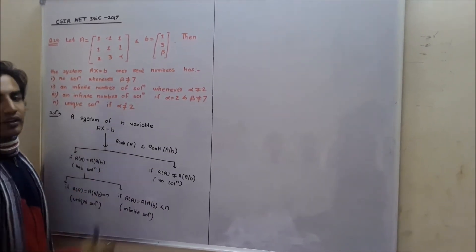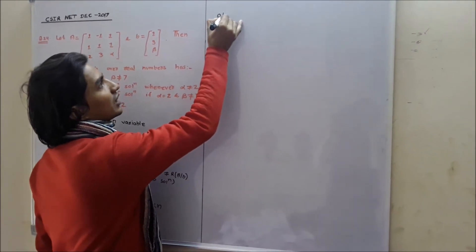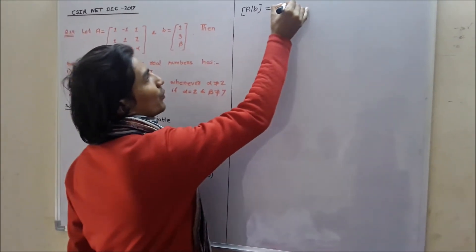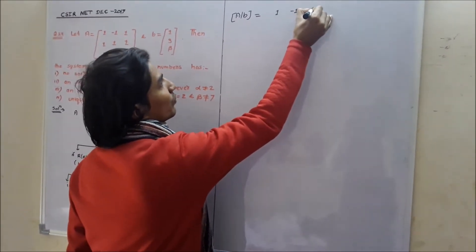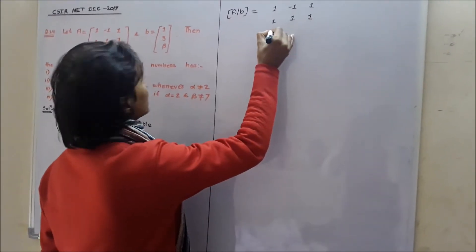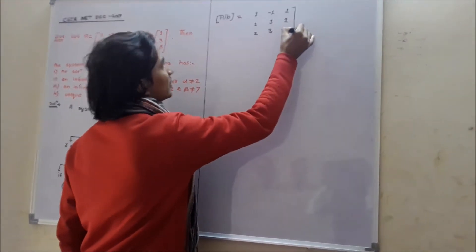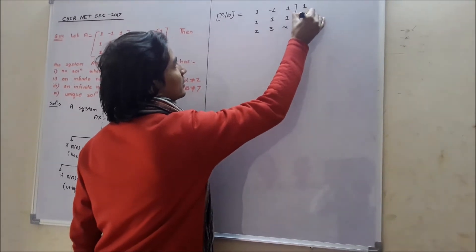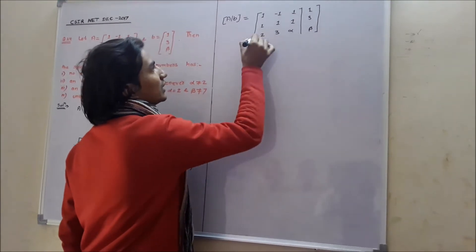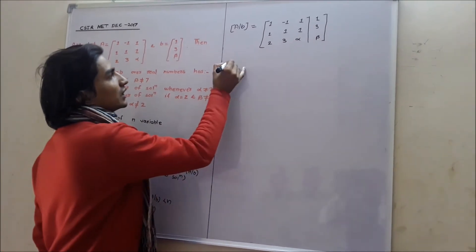Now I am going to find the rank of A and the rank of the augmented matrix [A|b]. The augmented matrix [A|b] is equal to: 1, -1, 1, 1 | 1; 1, 1, 2, 3 | alpha; 1, 3, beta — and rank of A equals rank of B.